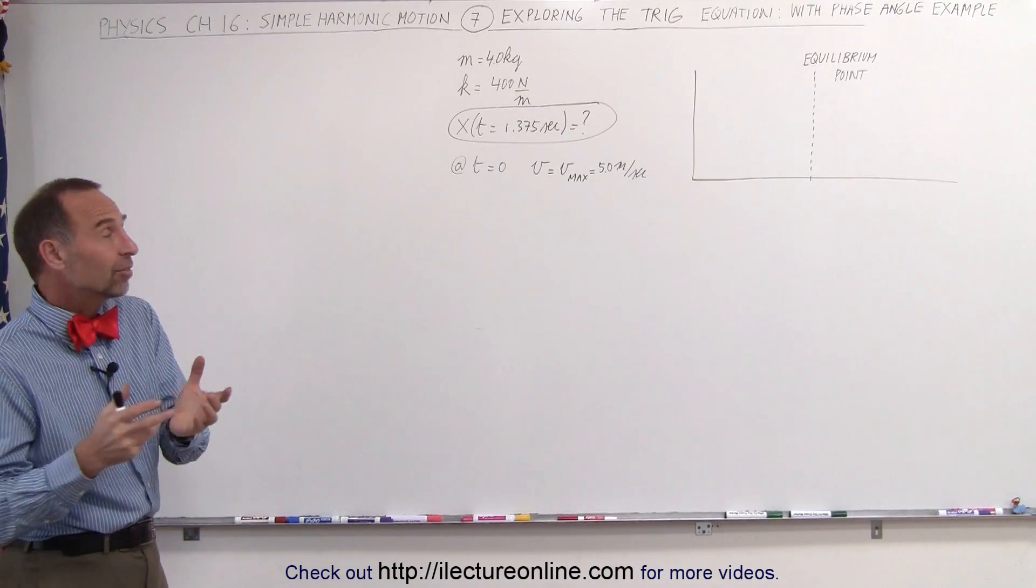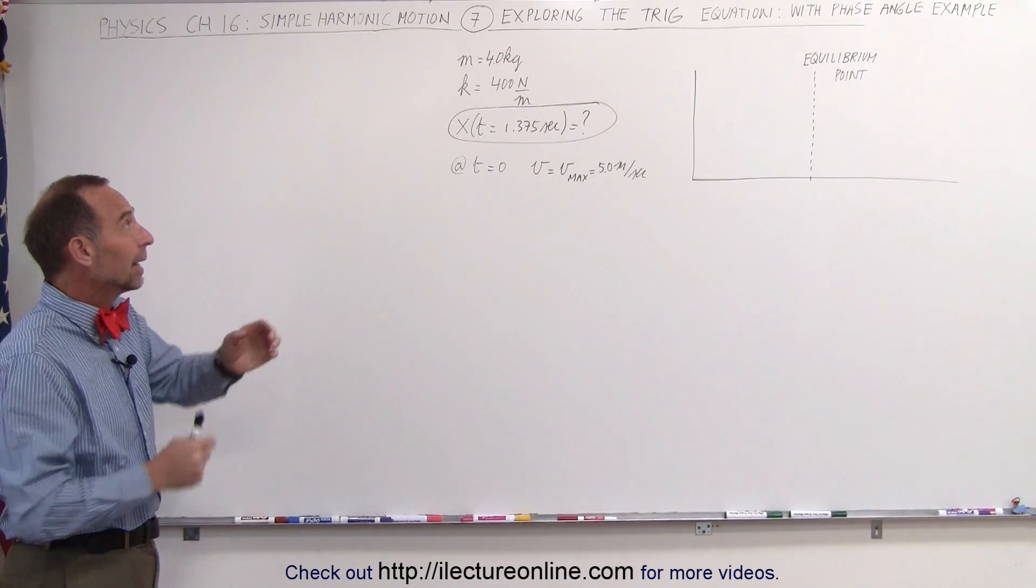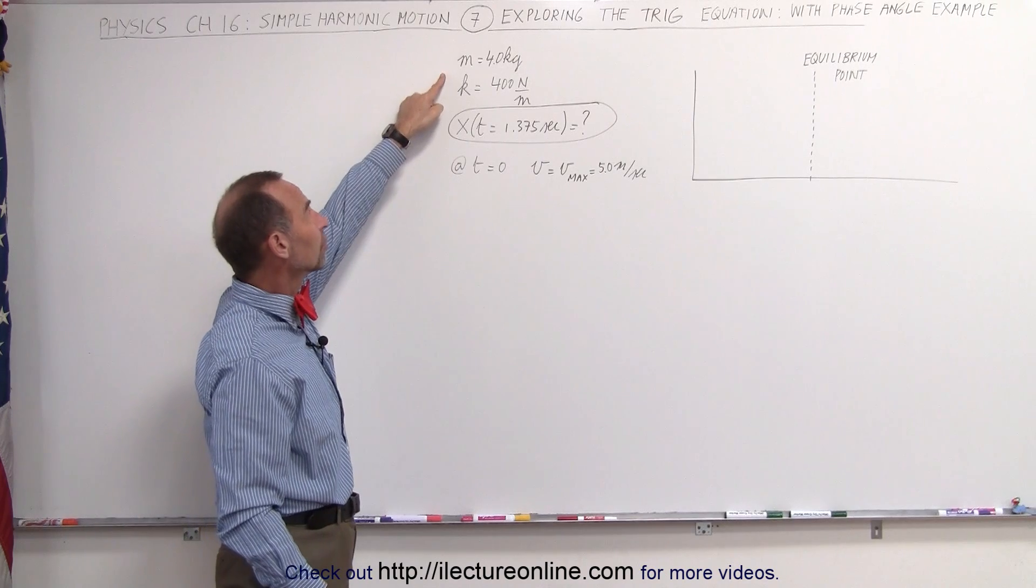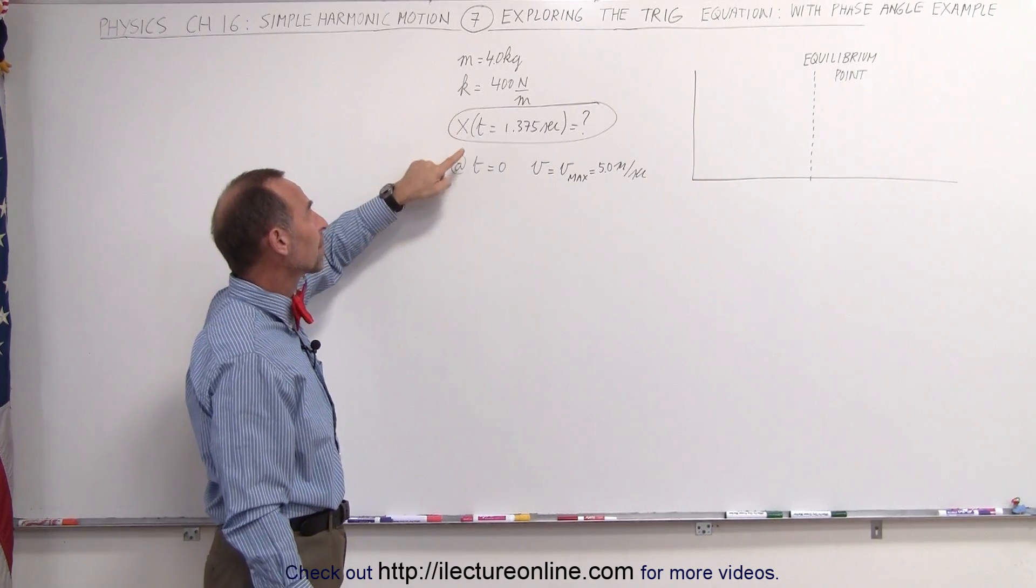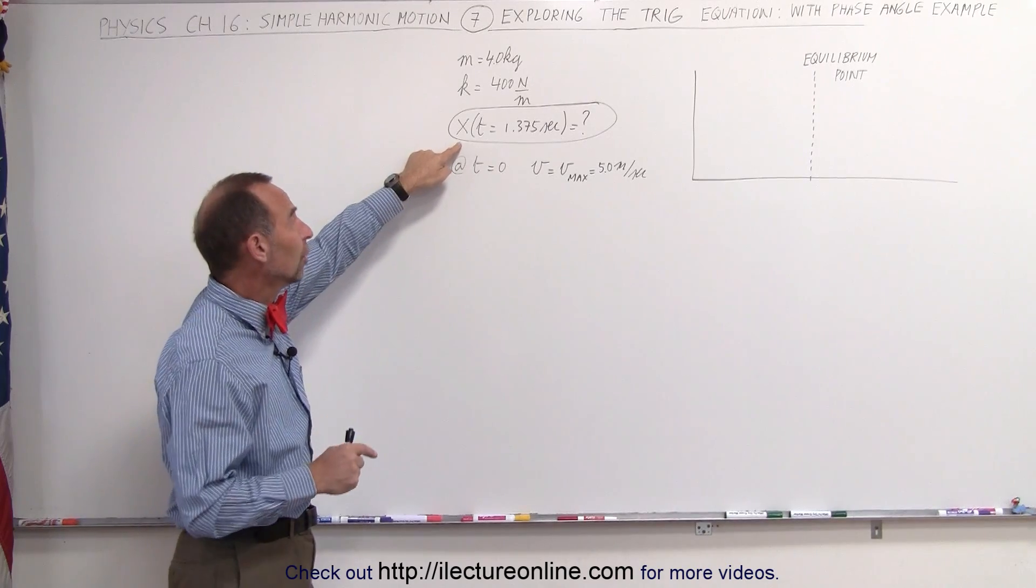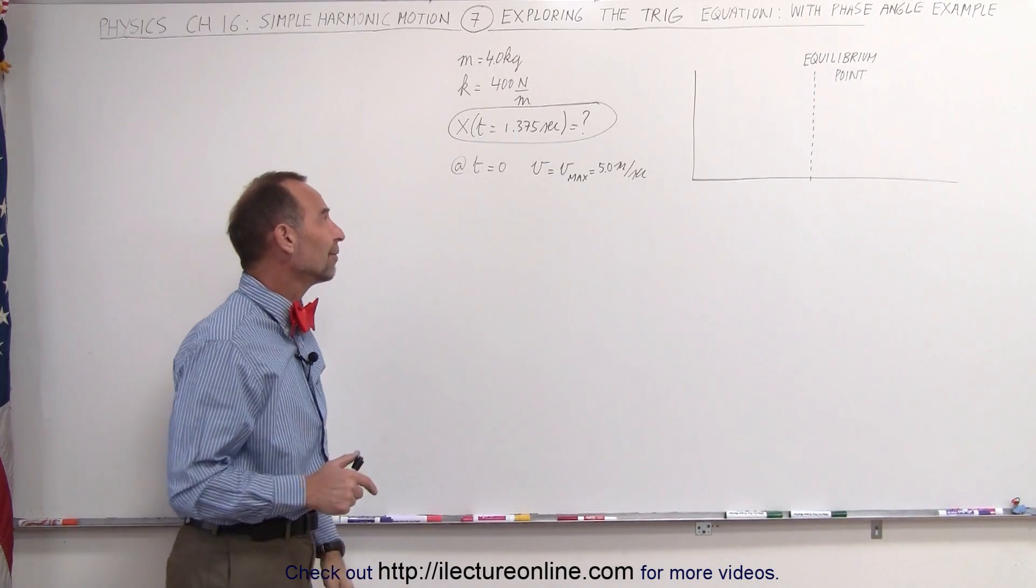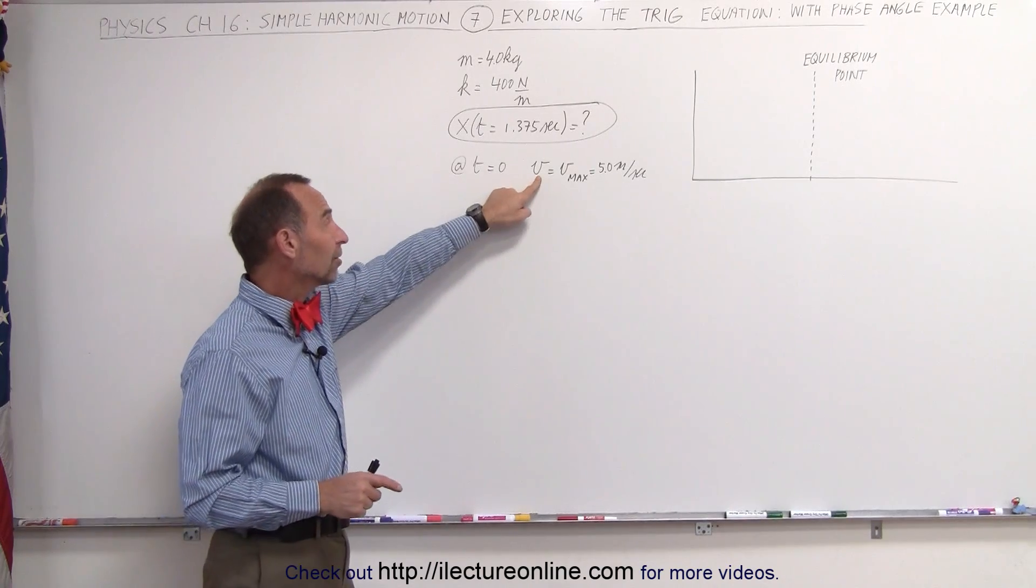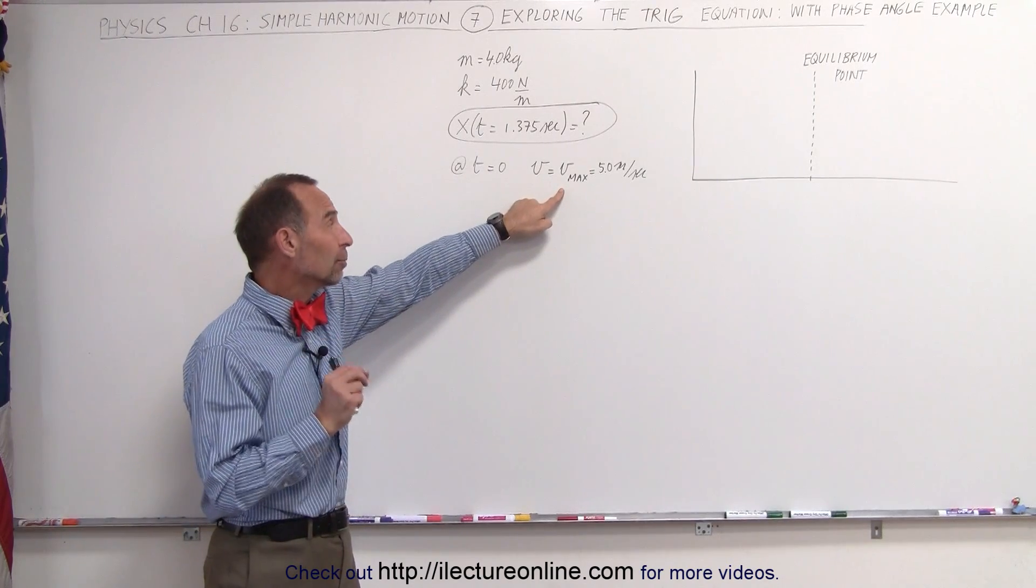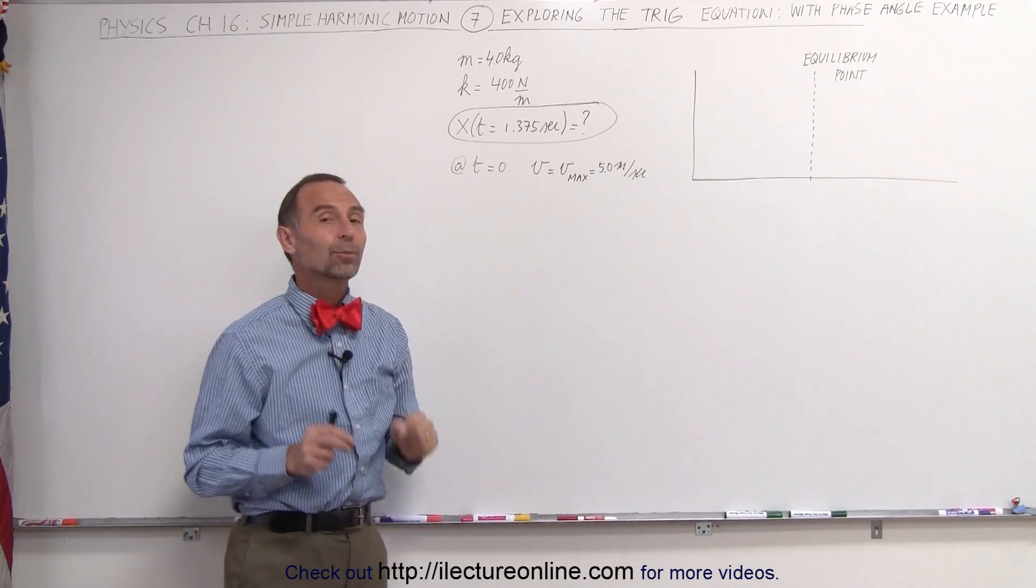We have a mass connected to a spring. The mass has a mass of four kilograms, the spring has a spring constant of 400 newtons per meter, and we want to know its position when time equals 1.375 seconds. But at time equals zero, the velocity equals the maximum velocity of the motion, which is equal to five meters per second.